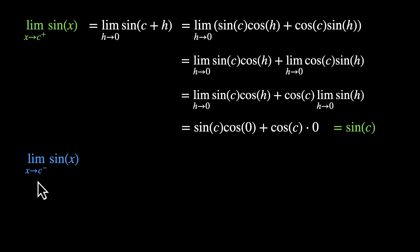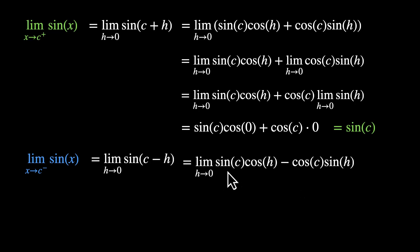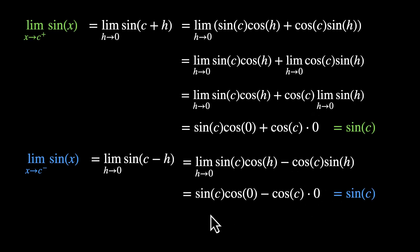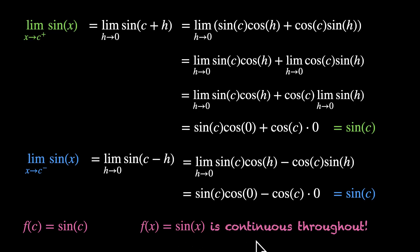The left-hand limit at c is limit x→c⁻ of sin(x), which equals limit h→0 of sin(c − h). We apply sin(a − b) = sin(a)cos(b) − cos(a)sin(b), giving sin(c)cos(h) − cos(c)sin(h). Spreading the limit: sin(c) · cos(0) − cos(c) · 0 = sin(c) · 1 = sin(c). So using the addition identity of sin and the fact that limit h→0 of sin(h) = 0, we've proved that the left-hand limit and right-hand limit both equal the value of the function at c, which is sin(c). Since this works for any value of c in the domain, f(x) = sin(x) is continuous throughout.